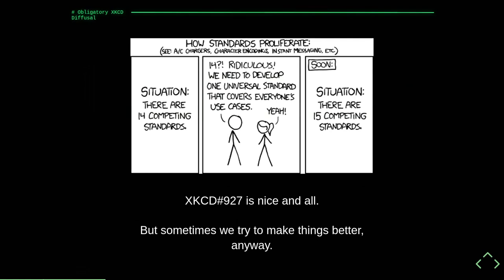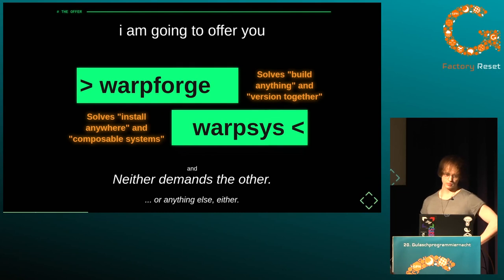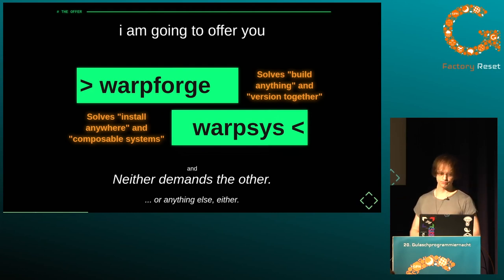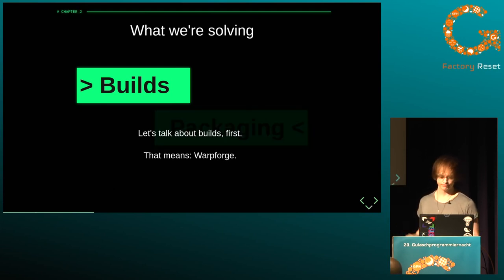So all that said, yes, I'm proposing a new system. I have seen the relevant xkcd. I'm going to try to make something better anyway. I'm offering WarpForge, a tool for building, and a set of suggestions called Warpsys — for lack of a better title — which is a style for packaging. Both of these are going to be fiercely independent from each other. I'm going to try to build the smallest possible reusable bits and proceed with those. WarpForge the build tool is about building anything and solving that 'version together' problem — that list of 15 different things I wish were connected. Warpsys recommendations try to solve more of those composable systems requirements.